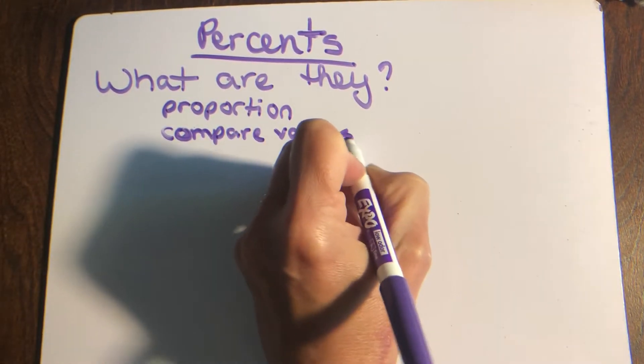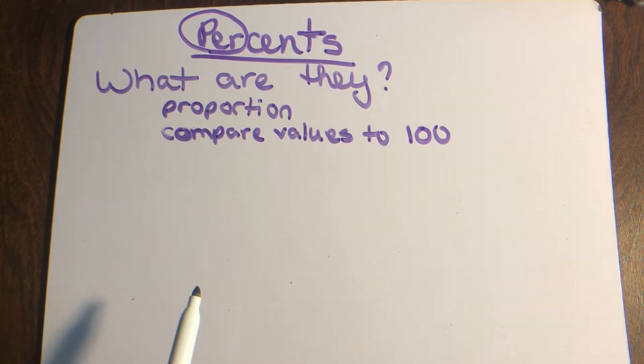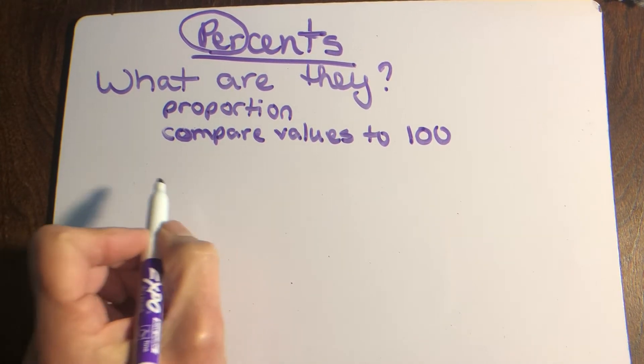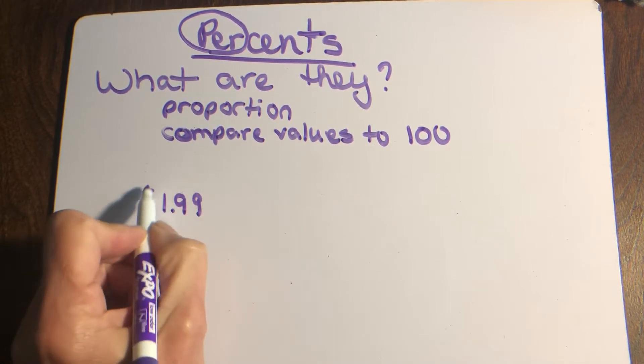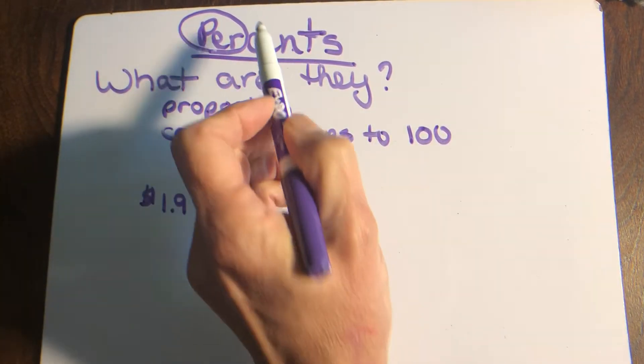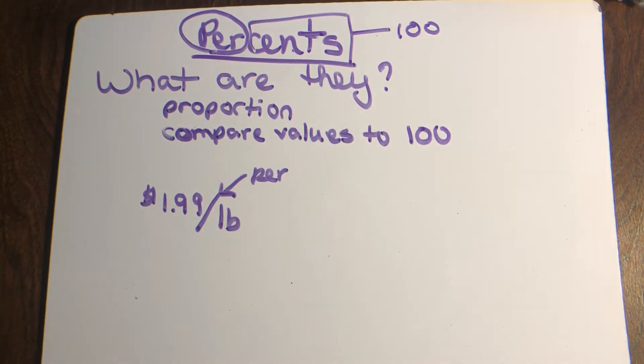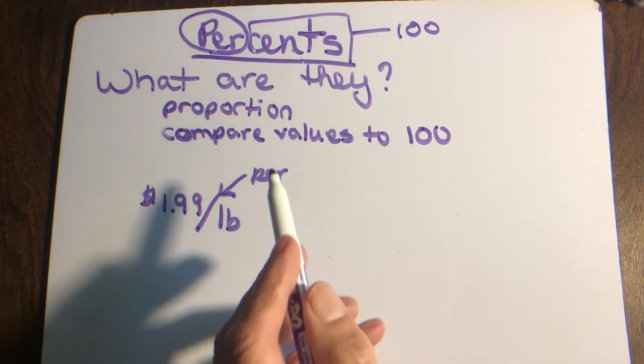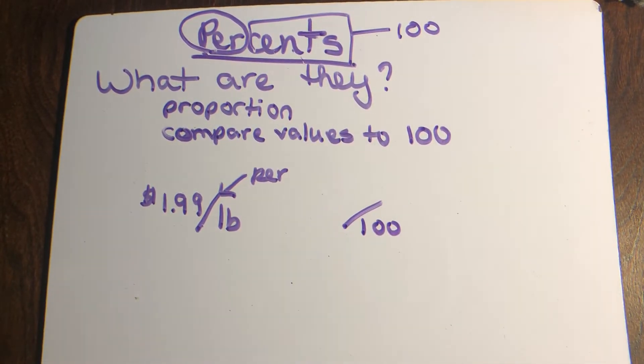The number 100, like per - remember that word per from unit rates, like if you were buying something at the grocery store for a dollar ninety-nine per pound. So per cent - cent means 100. Think about cents in a dollar - there are 100 cents, like pennies. Or the word century - there are 100 years in a century. So a percent is like per 100, because that's kind of how we write that word per.